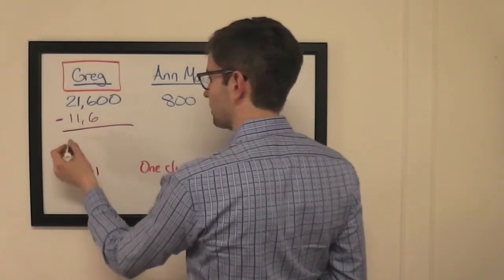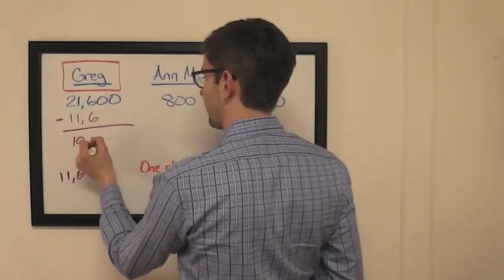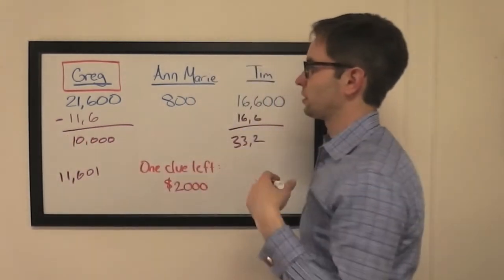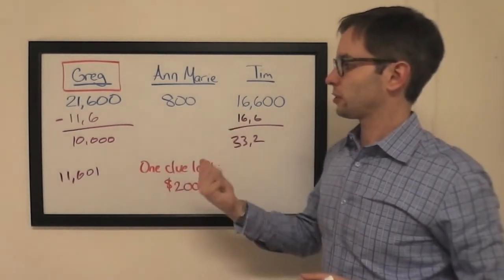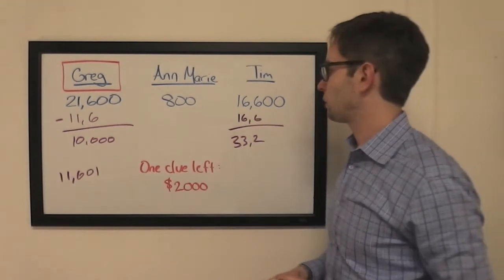He's wrong with that wager, he's going to be left with just a shade under $10,000. Still in contention, even if Tim gets that $2,000 clue, and Greg will be in a much better position if he himself gets that $2,000 clue.